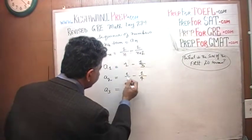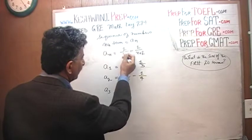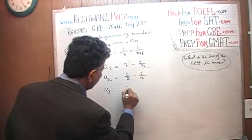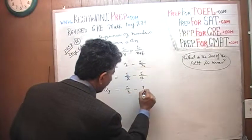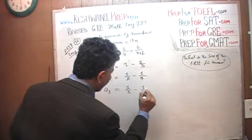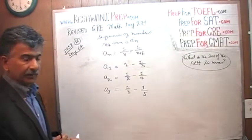Something has to happen. The third term is going to be 1/3 minus 1/5. Voilà — do you notice anything?